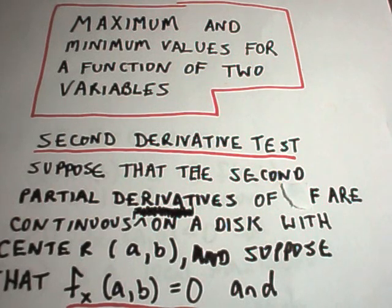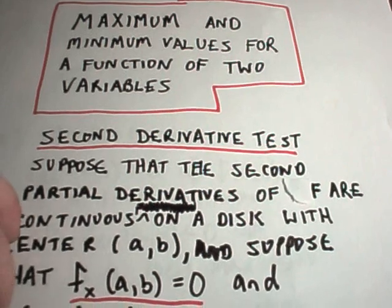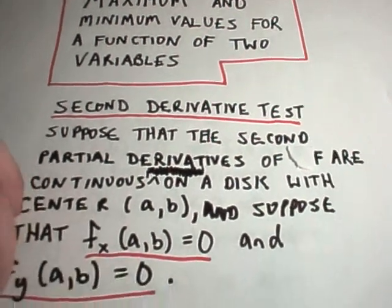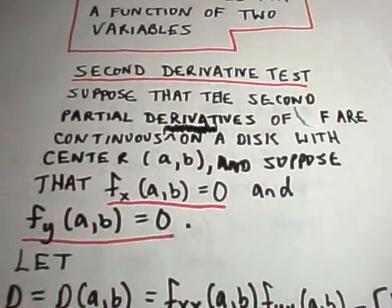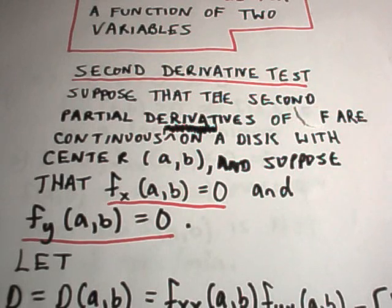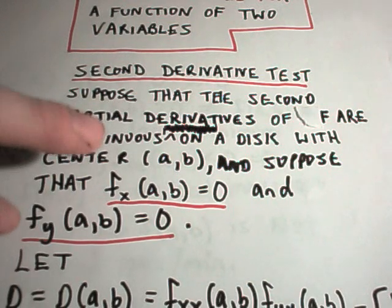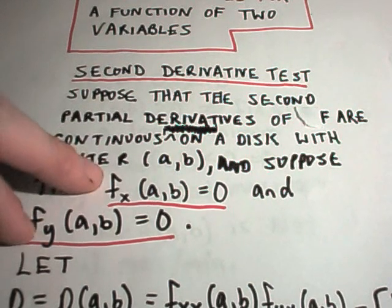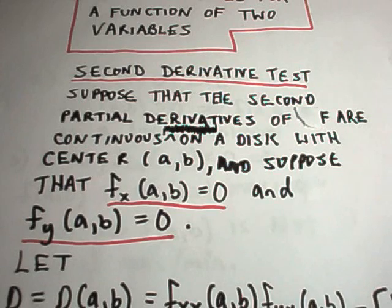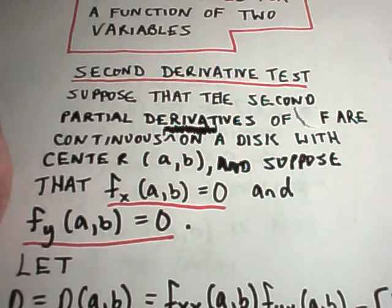Suppose that the second partial derivatives of a function f are continuous on a disk with center a, b. And suppose that the partial with respect to x at some point a, b is zero and the partial with respect to y at a, b is also zero. We're going to have to find those points a, b.